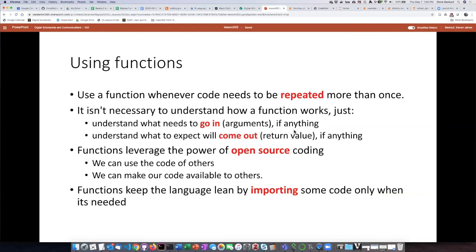As I said, sometimes the function may not have any arguments, there's nothing that needs to go in, it just puts something out. Sometimes you put things in and it doesn't have a return value, it just does something. So nothing actually comes out, there's an action instead.